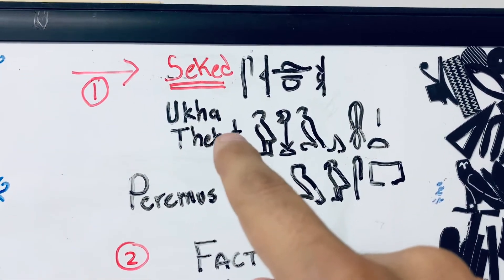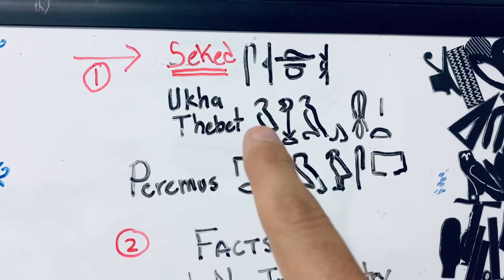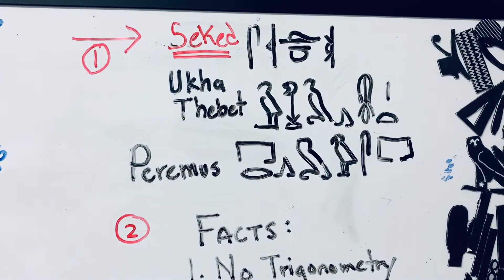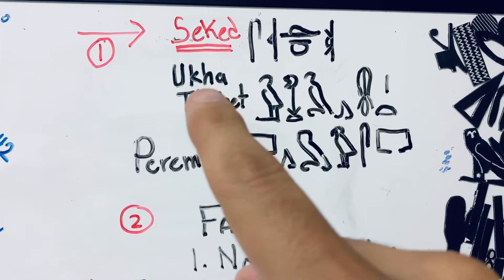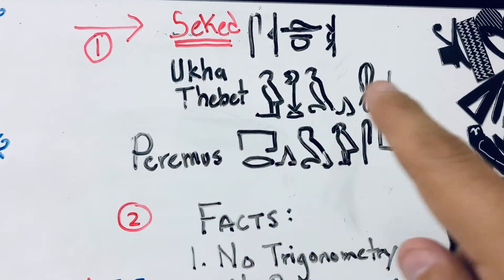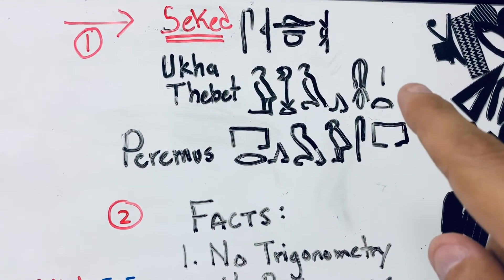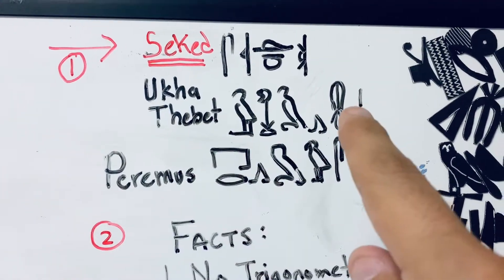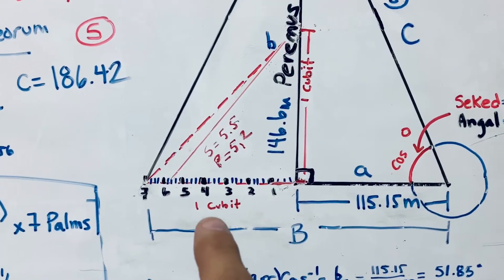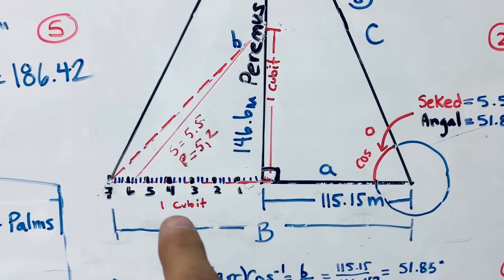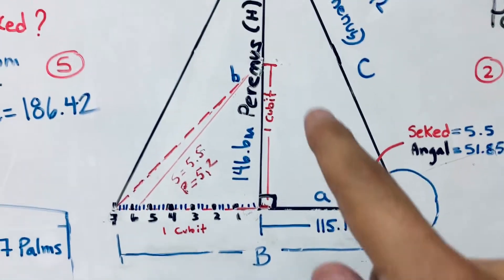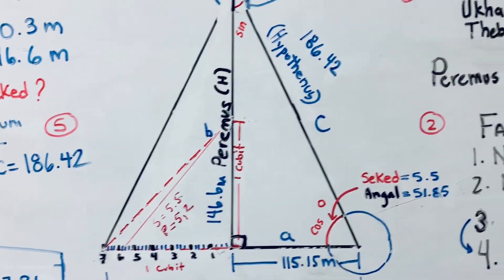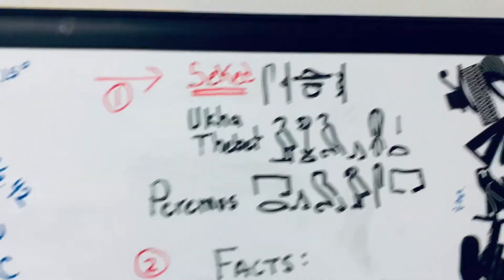The ukhathabet and the pyramids — we won't discuss in detail, just briefly let you know what they mean. The ukhathabet is the base of the pyramid, and the pyramids is the height. That's how they're written. Over here is the ukhathabet and then the pyramids, which is the height.